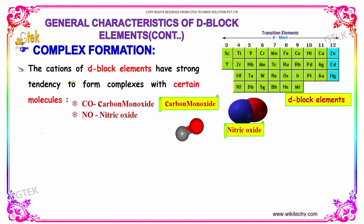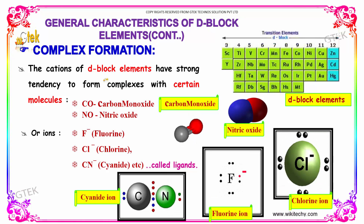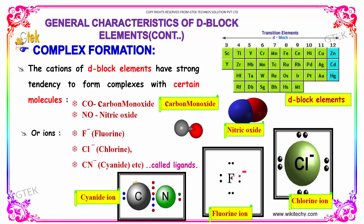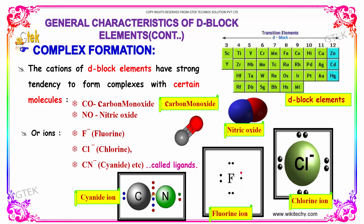The next topic is complex formation. The cation of a d-block element has a strong tendency to form complex ions with certain molecules like carbon monoxide and nitric oxide, or with ions like fluoride, chloride, and cyanide ions. These are called ligands.